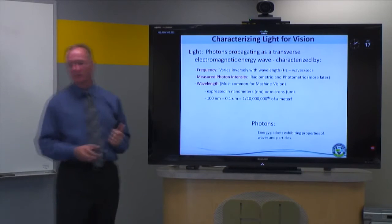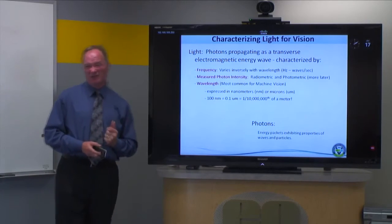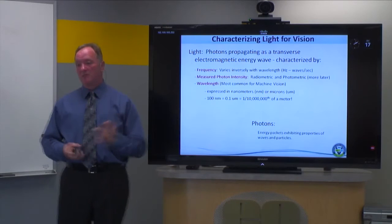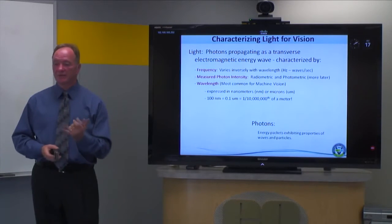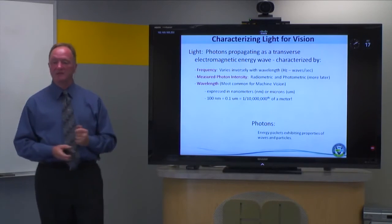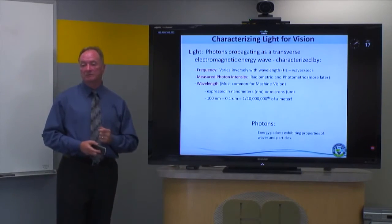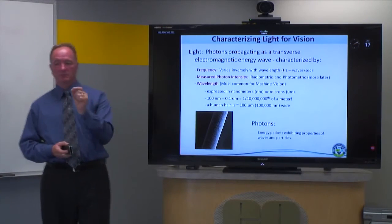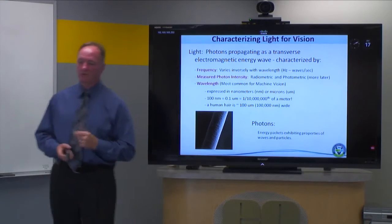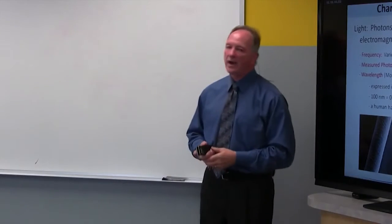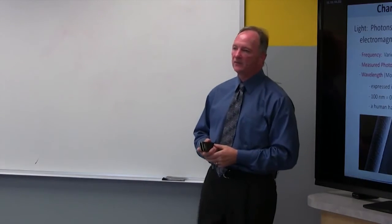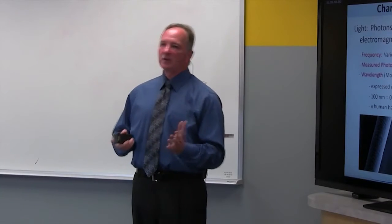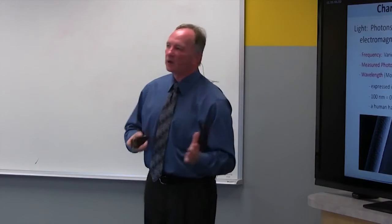For those less familiar with these sizes: 100 nanometers is effectively one ten-millionth of a meter. A human hair, for example, is 100 microns — or 100,000 nanometers — wide. That gives you an idea of some of the sizes we're dealing with and how we characterize light differently.